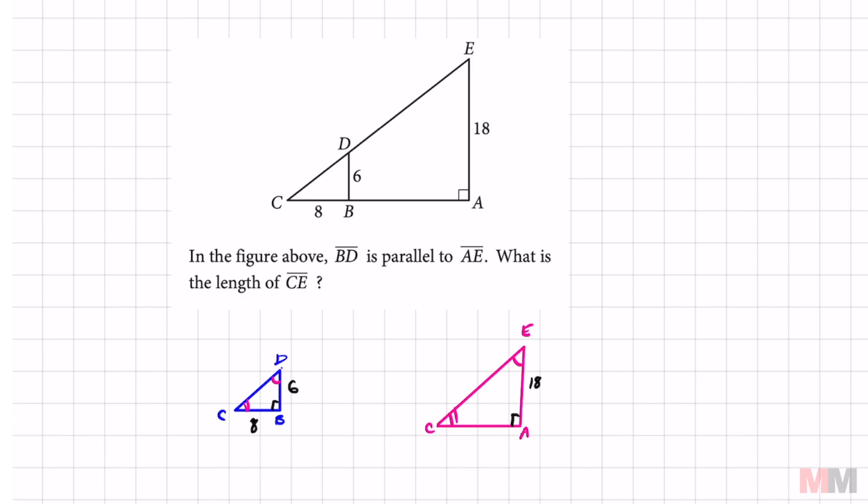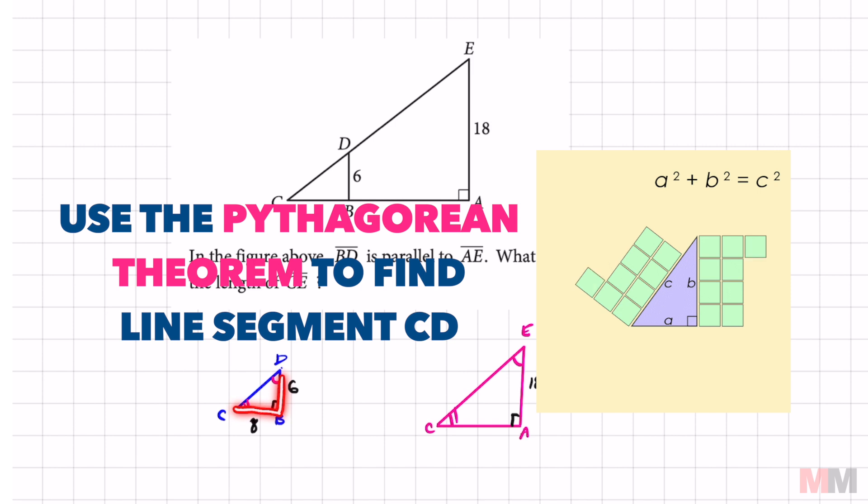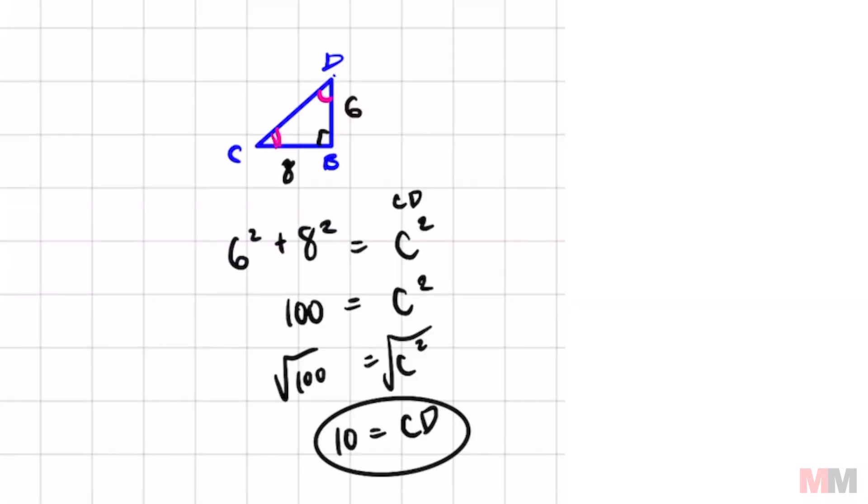Next place we want to look at is we want to find angle CD. And since this is a right triangle, we can use the Pythagorean theorem. Luckily, those numbers are really nice to work with. We got CD equals 10.